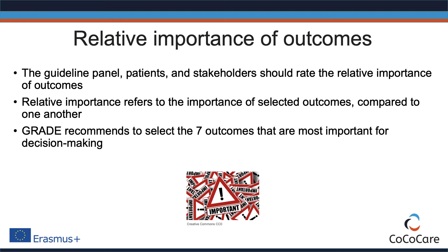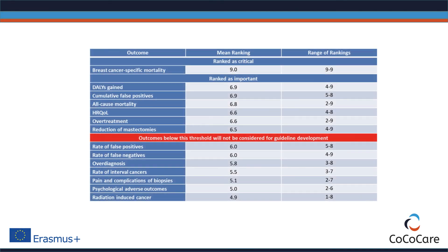GRADE recommends the inclusion of no more than 7 outcomes, including both benefits and harms. This number is mainly based on experience about the amount of information panels can deal with. In the example from the WHO position statement on mammography screening, the panel rated only breast cancer-specific mortality as critical, with six additional important outcomes on benefits and harms used for the development of recommendations.